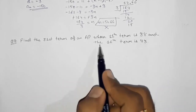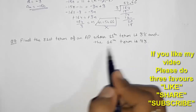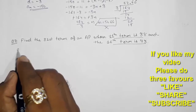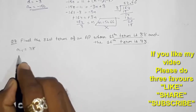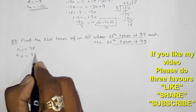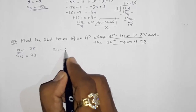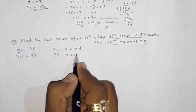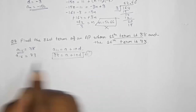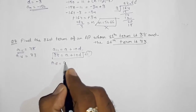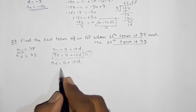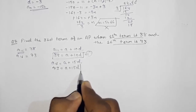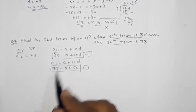Now moving to question number 7: find the 31st term of an AP whose 11th term is 38 and 16th term is 73. We have these two terms and want to find the 31st term. Using the nth term formula, a₁₁ = a + 10d = 38 (equation 1) and a₁₆ = a + 15d = 73 (equation 2).